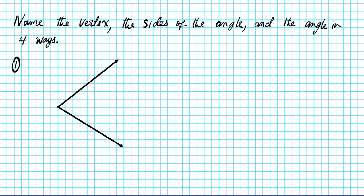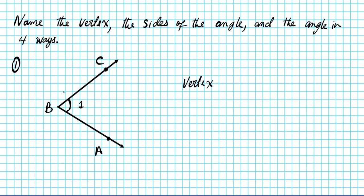So let's say we have an angle that looks something like this. This point here is the angle's vertex, labeled point B. We have a point on one ray called C, and another point on the other ray called A. The vertex is the common point where the two rays, ray BC and ray BA, meet — and that is point B. So the vertex is B.